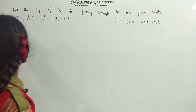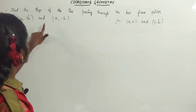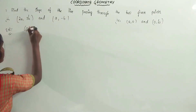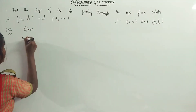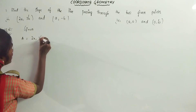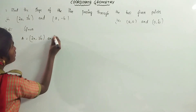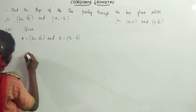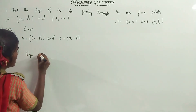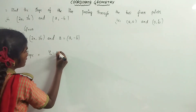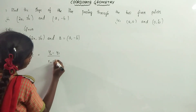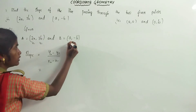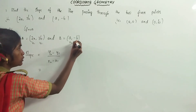Now we have to find the third one: (2a, 3b) and (a, -b). Given: A is equal to (2a, 3b) and B is equal to (a, -b). Slope is equal to y2 minus y1 by x2 minus x1. Here x1, y1, x2, y2 are identified.